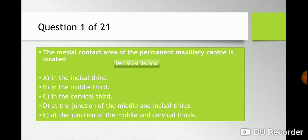...a) in the incisor third, b) in the middle third, c) in the incisor third, d) at the junction of the middle and incisor thirds, e) at the junction of the middle and cervical third. This is why you have to review the height of contours and contact areas of all the teeth — make sure you memorize that. The answer is d) at the junction of the middle and the incisor third.